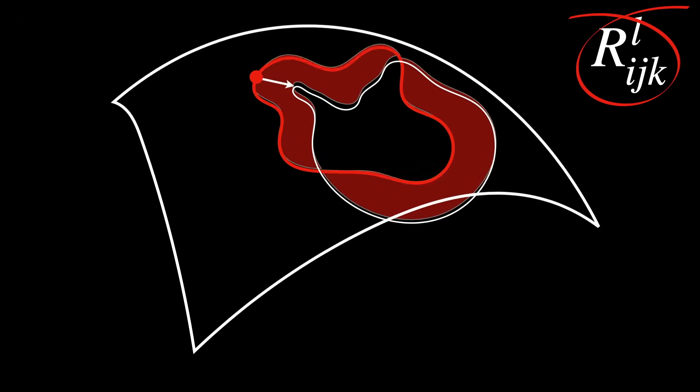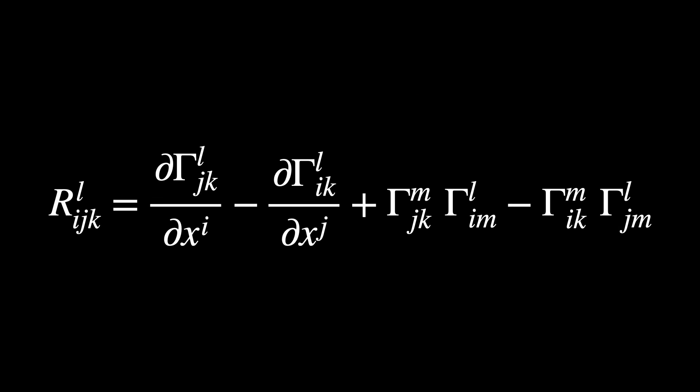It is computed through the following formula. So the partial derivatives of the Christoffel symbols plus these multiplications of Christoffel symbols. The Christoffel symbols describe how vectors change infinitesimally in a single direction.